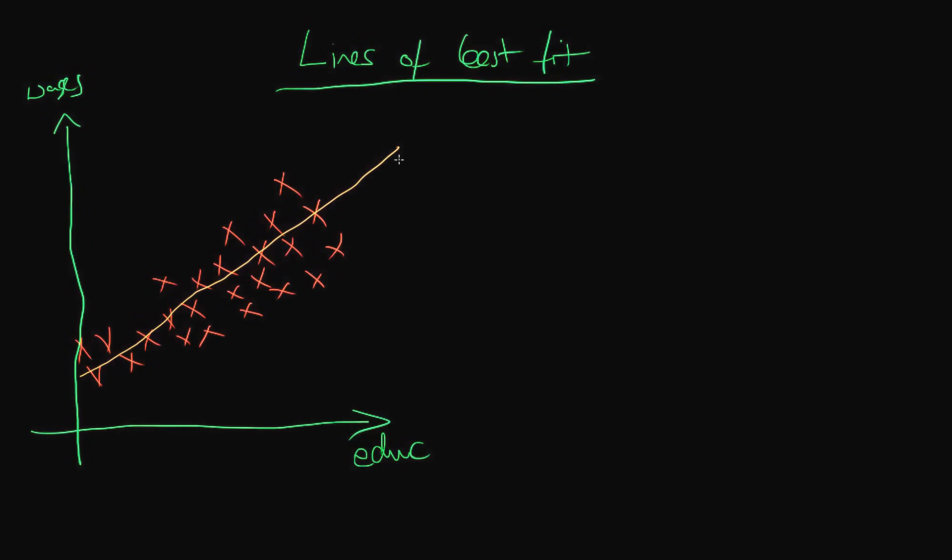So we might fit a line which goes through our data like that. Again, not the straightest line in the world, but you get the idea. And this line tells us, if we've done a relatively good job of drawing it, if someone had 10 years of education, what would we expect their average weekly wage to be.